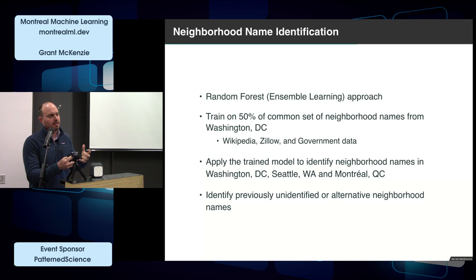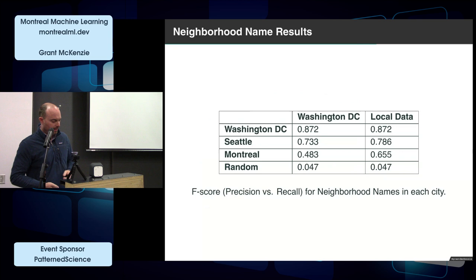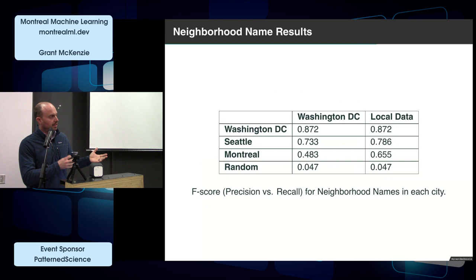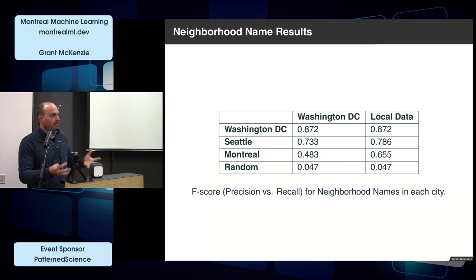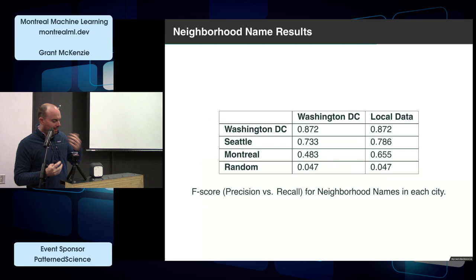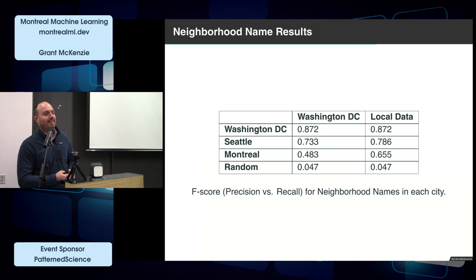Looking at the F1 score — precision versus recall — for our random forest model: for Washington, D.C., it did pretty well based on D.C. data since we trained and tested on that. Comparing D.C. to Seattle, it actually did reasonably well too — trained on D.C. data, applied to Seattle, it does a pretty good job identifying neighborhoods given this is all user-generated content. Montreal, not so well, which was an interesting artifact. The reality is the data we had for Montreal was a lot less — we collected the six months that didn't overlap July 1st, which is when everything is posted on Craigslist before moving day. The localized data still did a lot better than applying a D.C. model to Montreal.